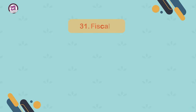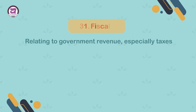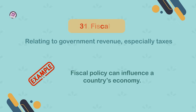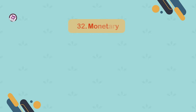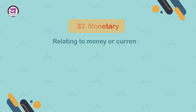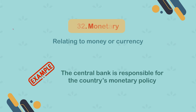31. Fiscal. Relating to government revenue, especially taxes. Example: fiscal policy can influence a country's economy. 32. Monetary. Relating to money or currency. Example: the central bank is responsible for the country's monetary policy.